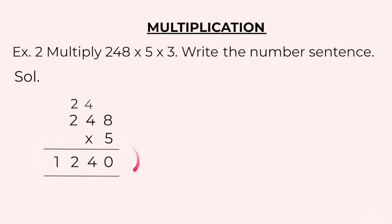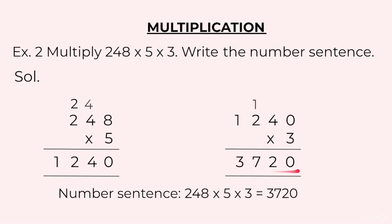Now we will multiply this 1240 with 3. We will start by multiplying 3 by 0. 3 zeros are 0. 3 fours are 12, 1 at the top, 2 at the bottom. 3 twos are 6 plus 1, 7. 3 ones are 3. So our final answer is 3720. We also have to write the number sentence. So we will write 248 × 5 × 3 = 3720.